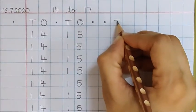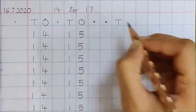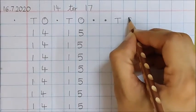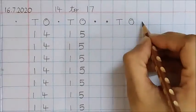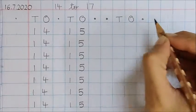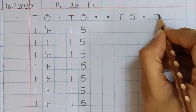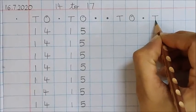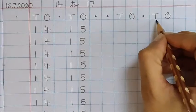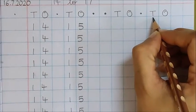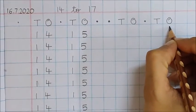In the next box write down T. In the next box write down O. Now again put a dot in the next box and in the next box write down T. And again in the next box write down O. T means 10's house and O means 1's house.